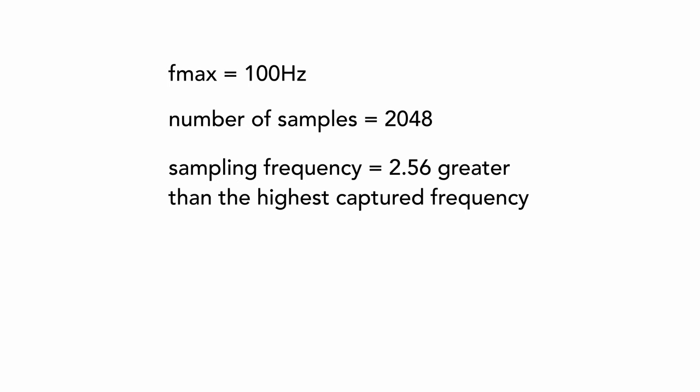For example, to detect 100 Hz with 2048 samples, 100 Hz times 2.56 equals 256 Hz is the required sampling frequency. 1 divided by 256 represents the time between samples in seconds. And with 2048 samples, 1 divided by 256 times 2048 equals 8 seconds, which is the measurement duration.